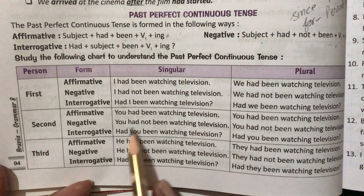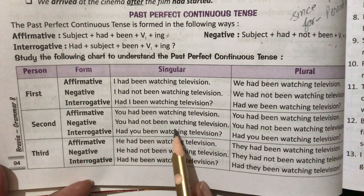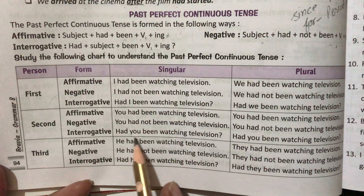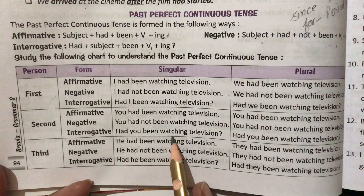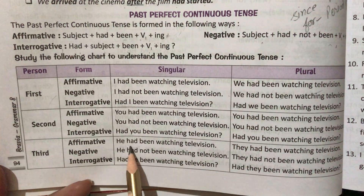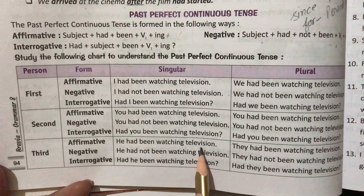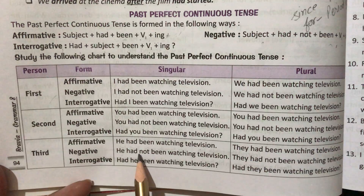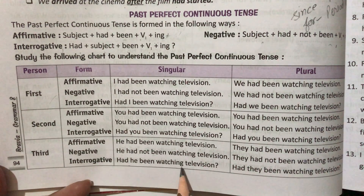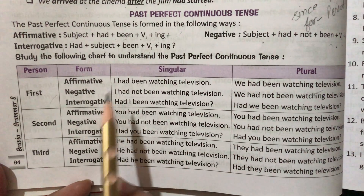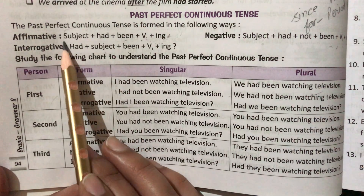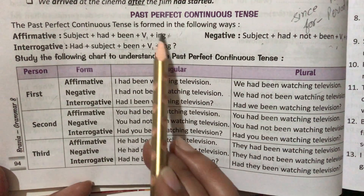You had been watching television. You had not been watching television. Had we been watching television? He had been watching television. He had not been watching television. Had he been watching television?